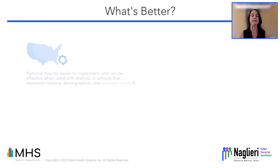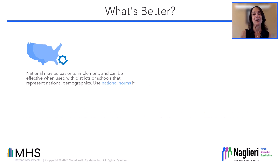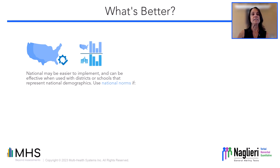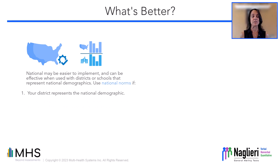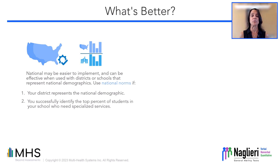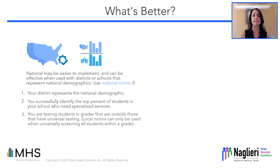National norms are easier to use and research shows that they can be effectively used with districts or schools that represent the national demographics. Use national norms if: one, your district represents the national demographic; two, you successfully identify the top percent of the students in your school who need specialized services; three, you are testing students in grades that are outside those that have been universally tested.